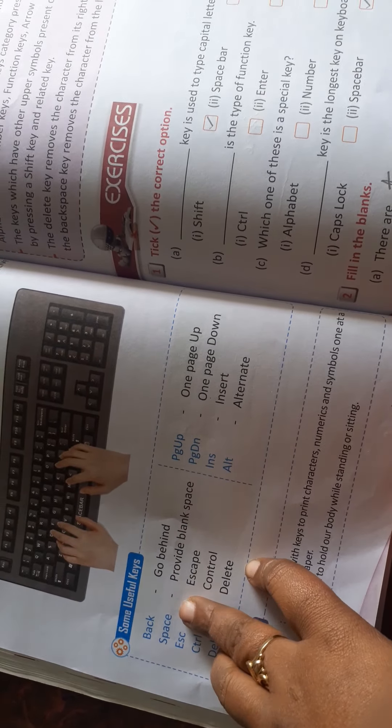PG Up means one page up. PG DN means one page down. INS means insert.